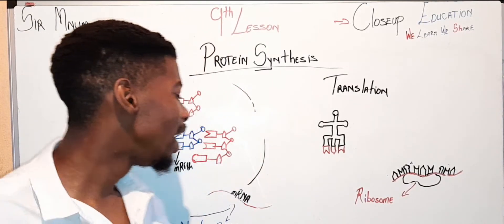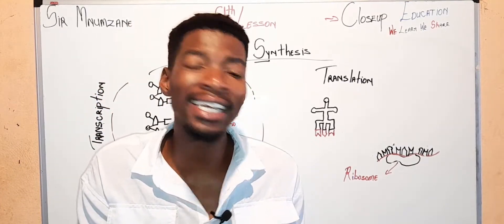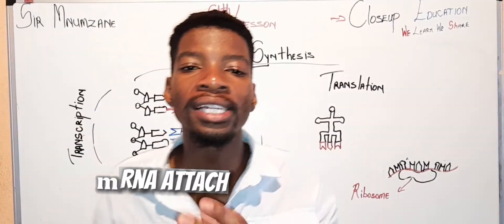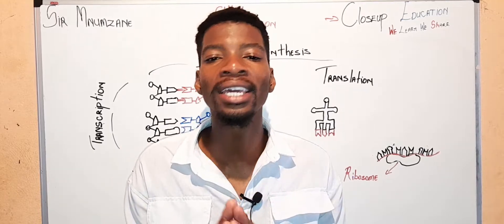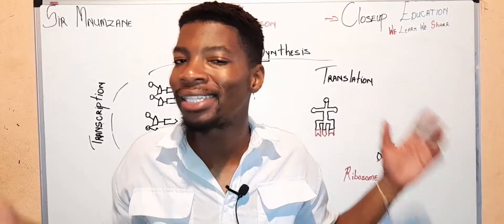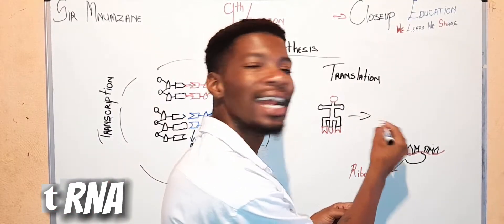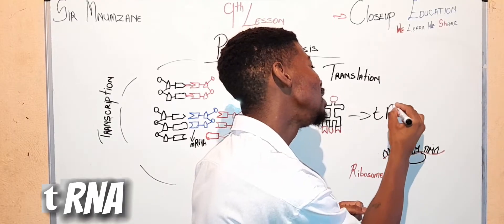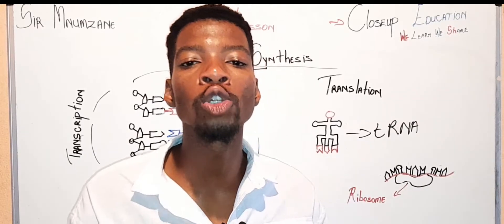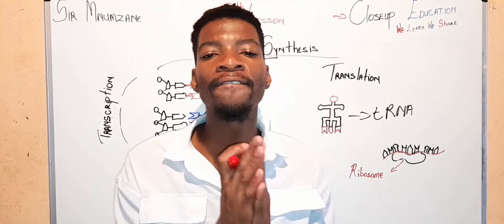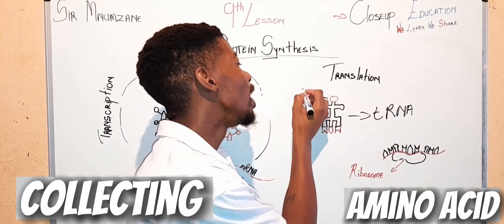The process of translation is worked by this mRNA, which has copied the protein genes from the DNA molecule, attaching itself to what we call a ribosome — also known as a protein-making machine. The ribosome is responsible for attracting what we call tRNAs, or transfer RNAs.